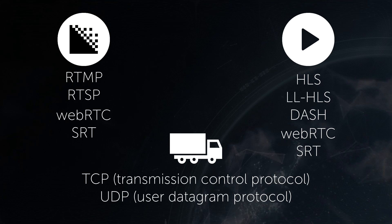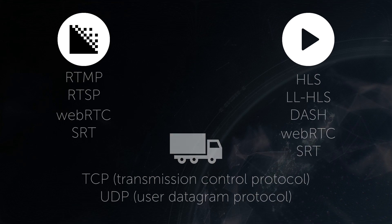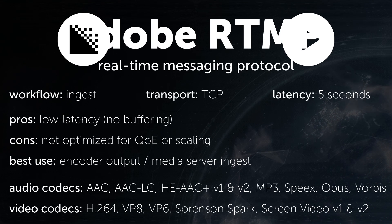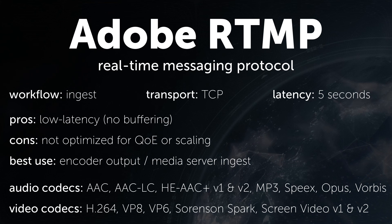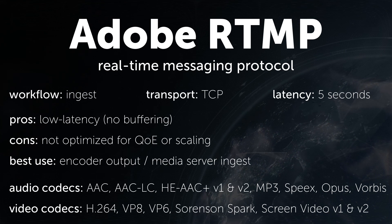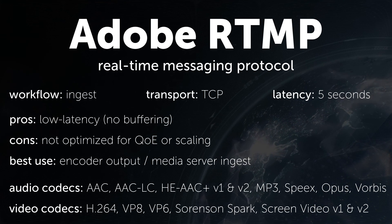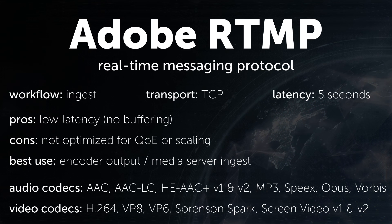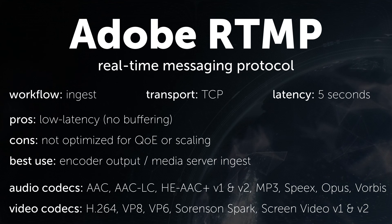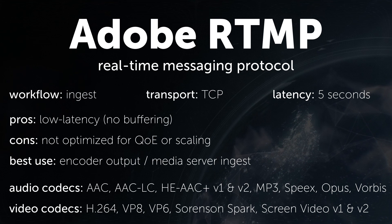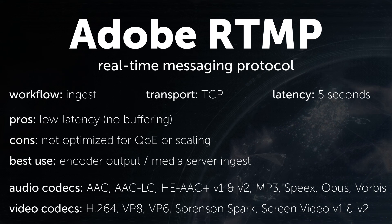So now that we have a little background, let's compare. Adobe RTMP is the most well-known live streaming protocol. Adobe used it between their dedicated streaming server and Flash Player. It was heavily used for decades, but more recently with the death of Flash, it's mainly used for ingest by media servers, where it has very wide support. This protocol uses TCP, but it requires no buffering, making it fairly low latency. On the downside, it's not optimized for quality of experience or scalability.